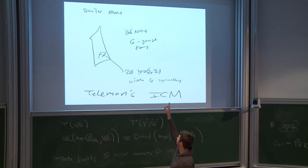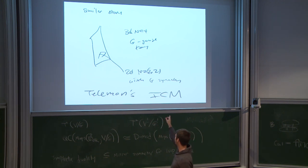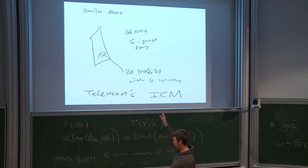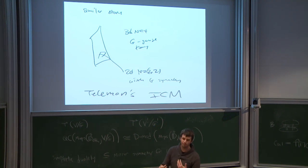There's a similar statement relating 3D N=4 gauge theories and 2D N=2 theories with G symmetry on the boundary. Telemann has talked a lot about this in his ICM. Sasha has results about computing the equivariant quantum cohomology of the flag variety this way, and I have results about Coulomb branches. This is all interpretable in this picture — it's the same type of argument, just about a field theory and its boundary.